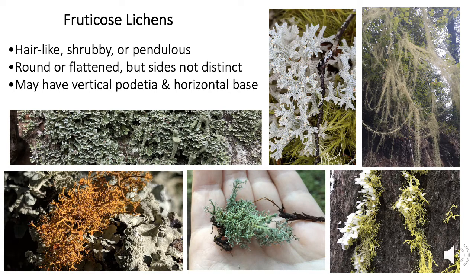Fruticose lichens are our third major growth form. These are the most three-dimensional, being hair-like, shrubby, or pendulous, with rounded or flattened lobes. If they are flattened, the two sides are typically not distinct from one another the way they are in foliose lichens. Some fruticose species have a vertical and horizontal portion — like in this Cladonia shown here — where you have an erect stalk portion called a podetium (plural: podetia), and the horizontal portion can be crustose or squamulose. Overall, the lichen is usually considered fruticose if it has these composite parts, including those stalks called podetia.